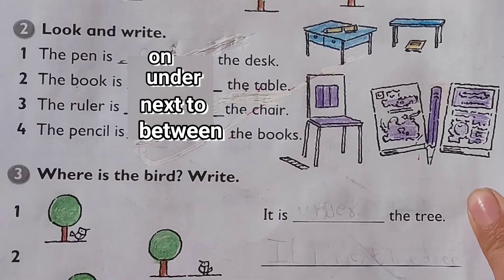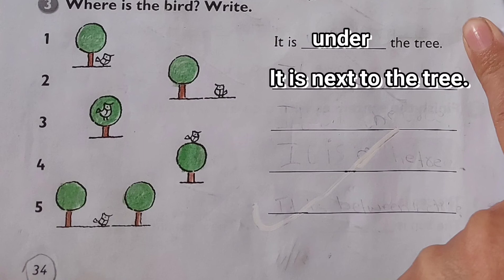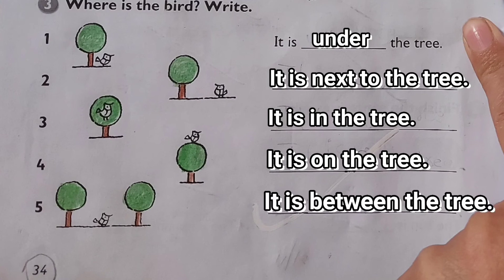Number three: where is the bird? Number one: it is under the tree. Number two: it is next to the tree. Number three: it is in the tree. Number four: it is on the tree. Number five: it is between the trees.